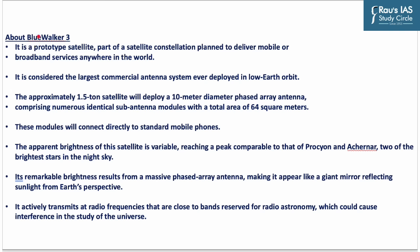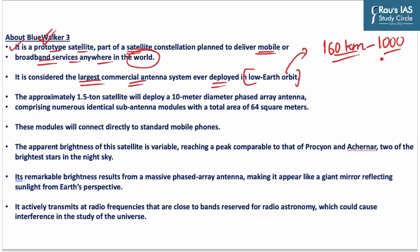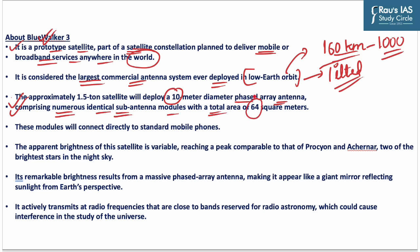Let us see some facts related to the BlueWalker 3 satellite. It is a prototype satellite, part of a satellite constellation planned to deliver mobile or broadband services anywhere in the world, and is considered the largest commercial antenna system ever deployed in low Earth orbit. Low Earth orbit is relatively closer to Earth's surface at an altitude of around 160 km to 1,000 km. BlueWalker 3 was launched in 2022 by AST SpaceMobile, a US-based company. The satellite deploys a 10-meter diameter phased array antenna comprising numerous identical sub-antenna modules with a total area of 64 square meters, and these modules will connect directly to standard mobile phones.